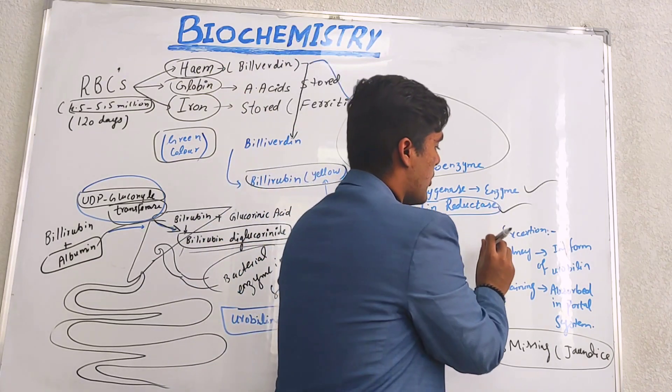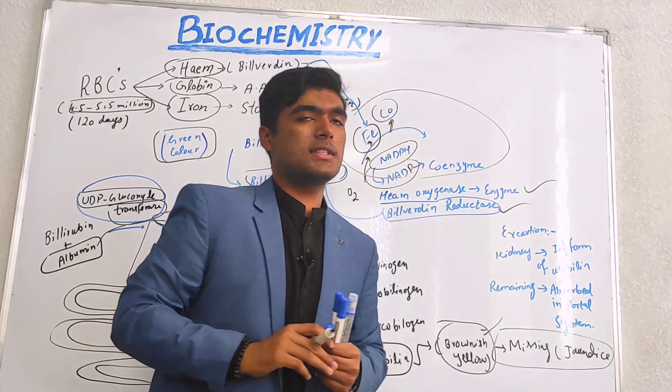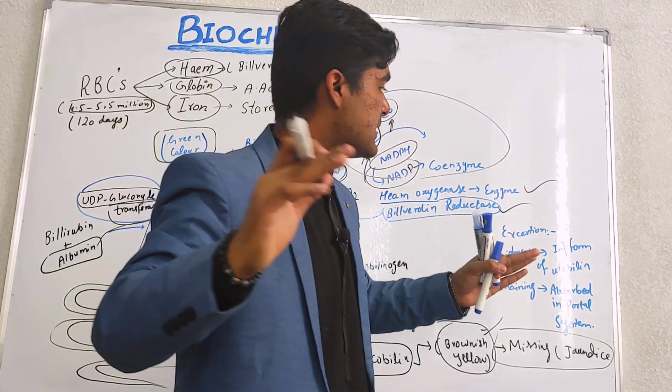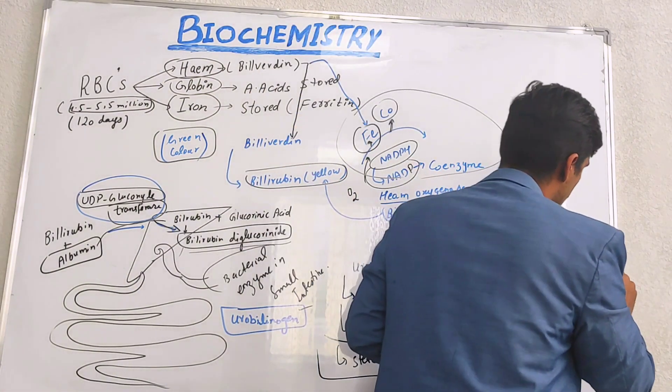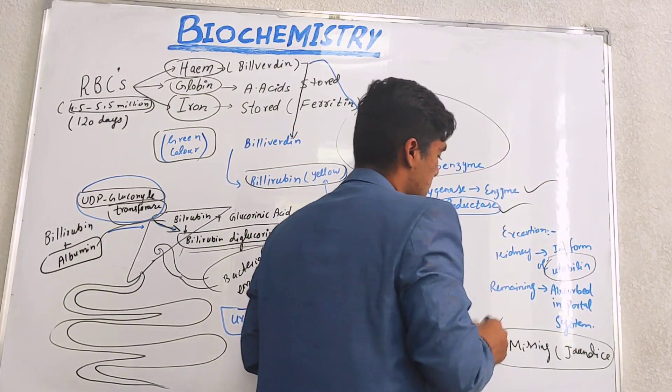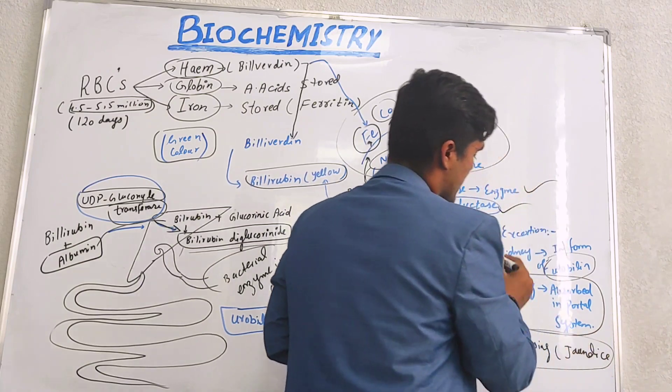The remaining amount of bilirubin which is in excess is excreted from the kidney in the form of urobilin, and the remaining is absorbed in the portal system.